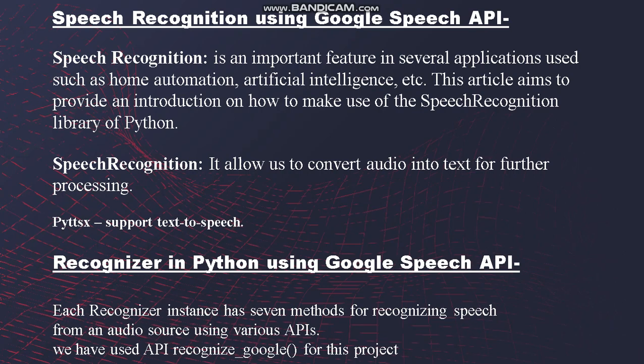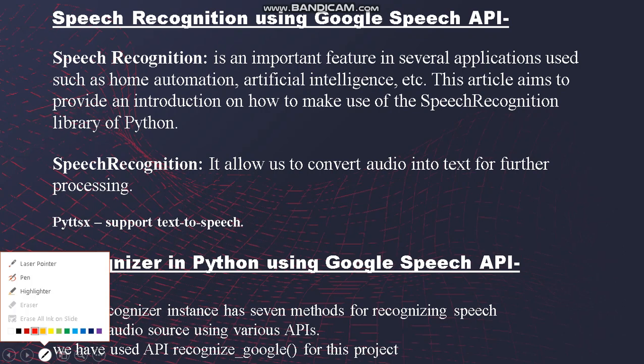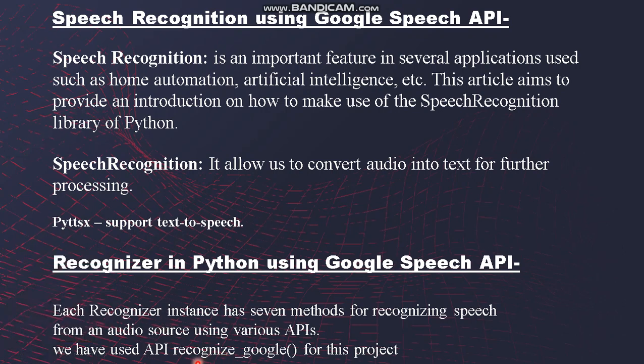Two things have been used: speech recognition and recognizing. Our system will take input through speech, so it should be recognized. How can it be recognized? It can be recognized through the API recognizer — specifically the recognizer provided by Google, which is the Google Recognize API.